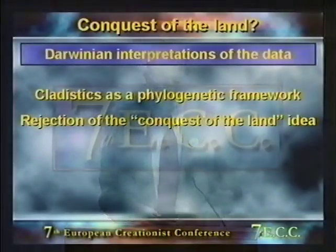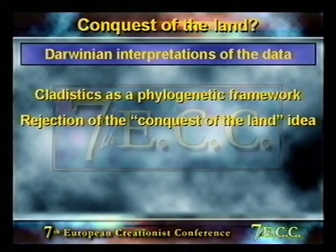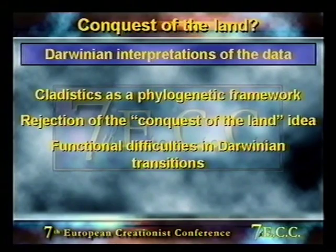Richard Dawkins was there, and it was very interesting because if you've read his books, it seems to me he goes in for a great deal of that kind of just-so storytelling. But there is a rejection of this kind of storytelling, at least in some Darwinian circles. We also have the problem that confronts Darwinians in terms of functional difficulties in explaining these transitions.